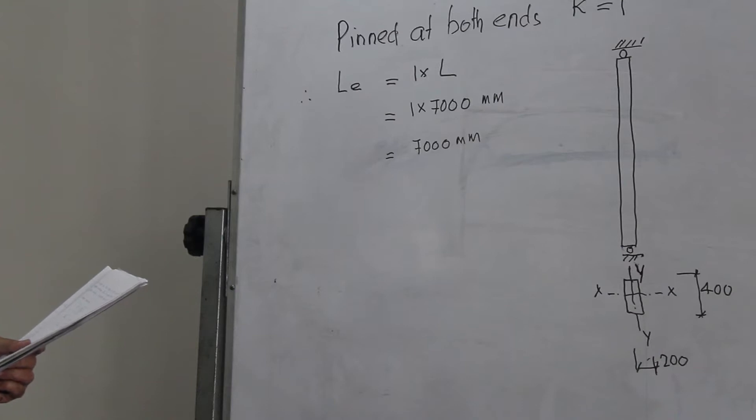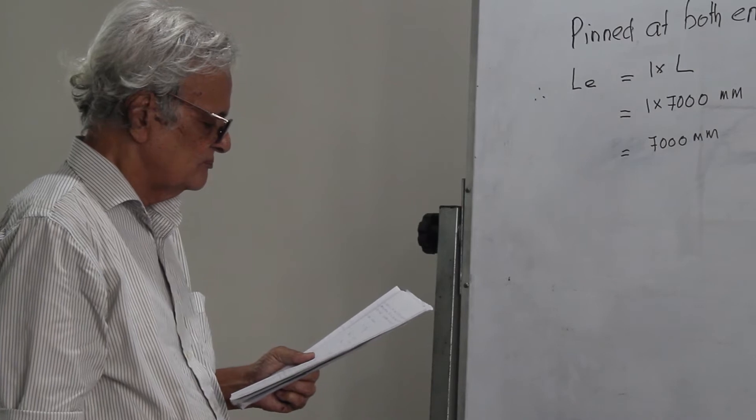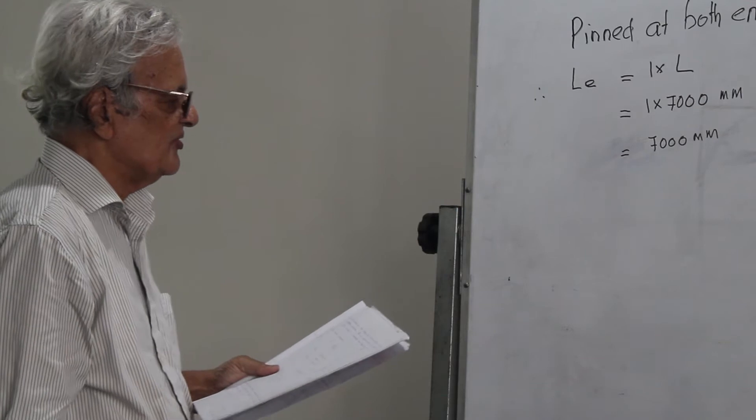So I_yy is the smaller value of I. This strut will buckle about the Y-axis.